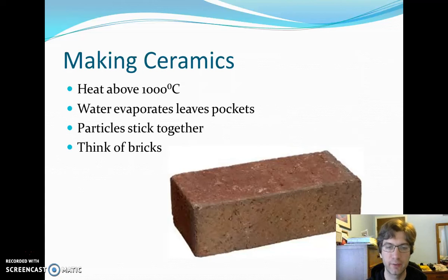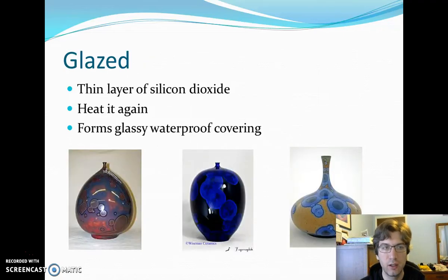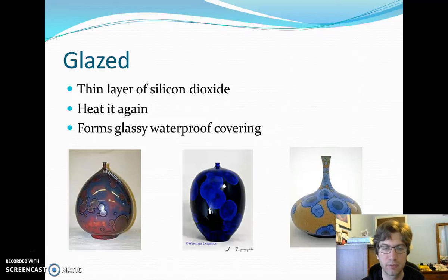Once that happens, our particles are going to stick together. You can think of bricks as a ceramic — they've been around for quite some time and are used for many building structures. If you look at a brick, you can see that it is very porous, with a lot of little imperfections. Think of those as the places where bubbles of water had to evaporate out. To make up for those imperfections, we glaze things over. Glaze is silicon dioxide and other chemicals that give it different looks and textures. After you fire the ceramics, you heat it up again with a coat of silicon dioxide, and it forms a glassy, waterproof covering so ceramics can hold water and preserve things quite well.